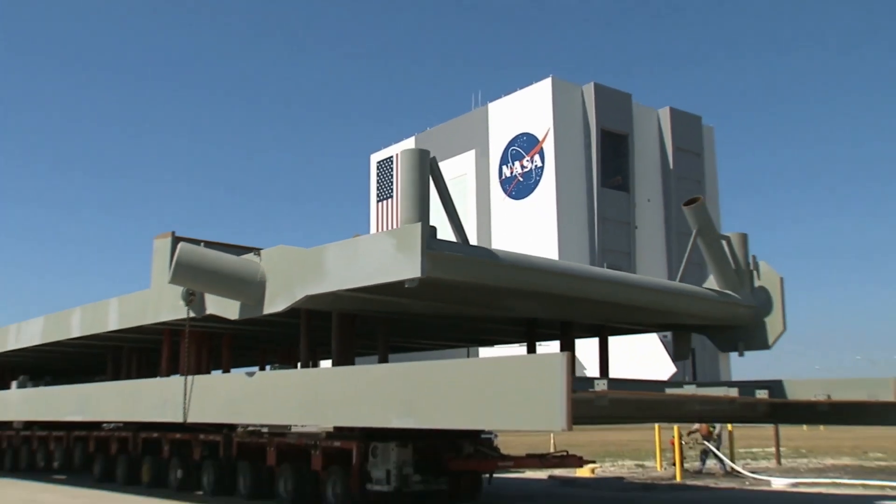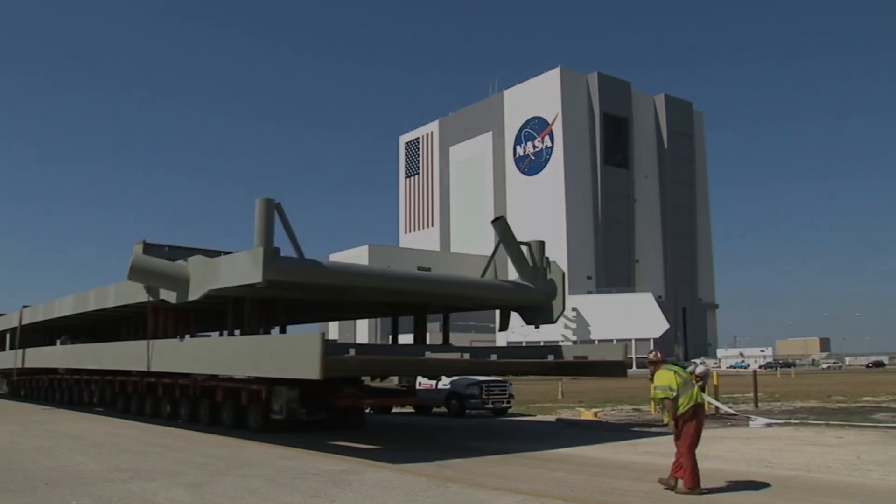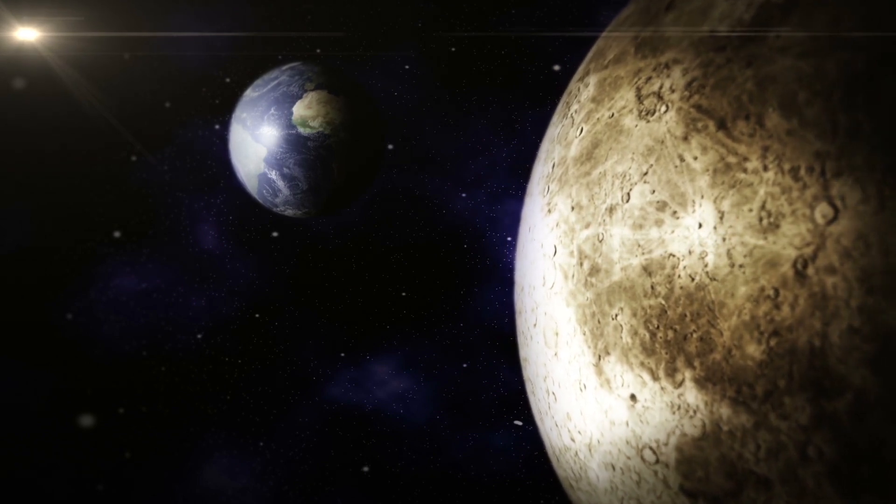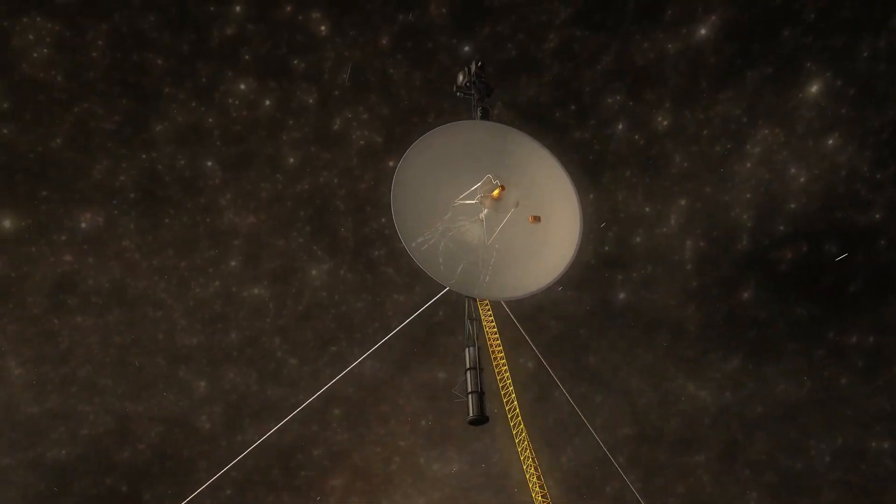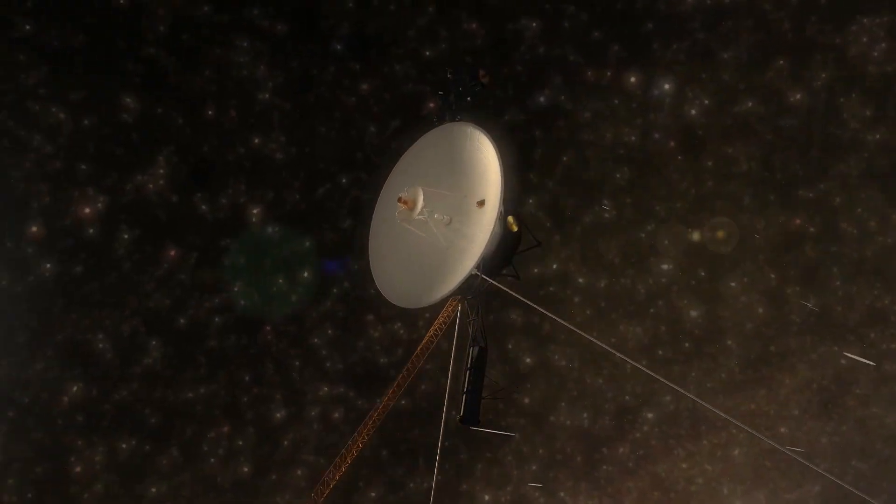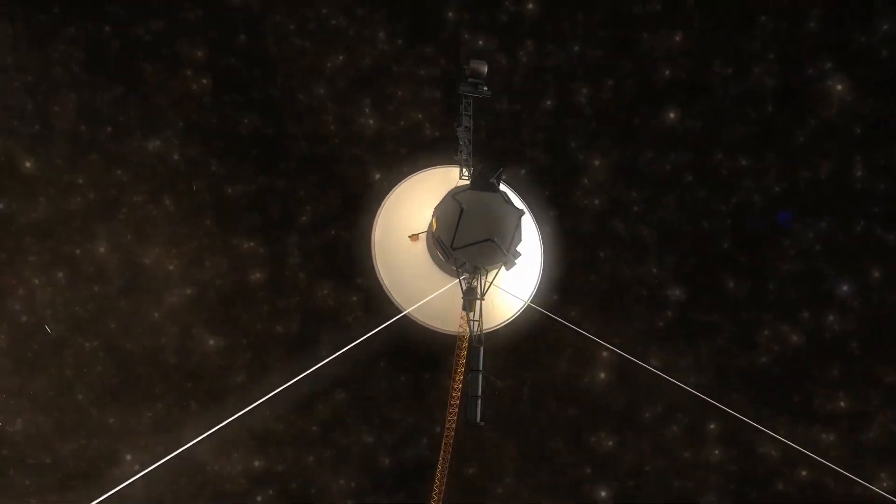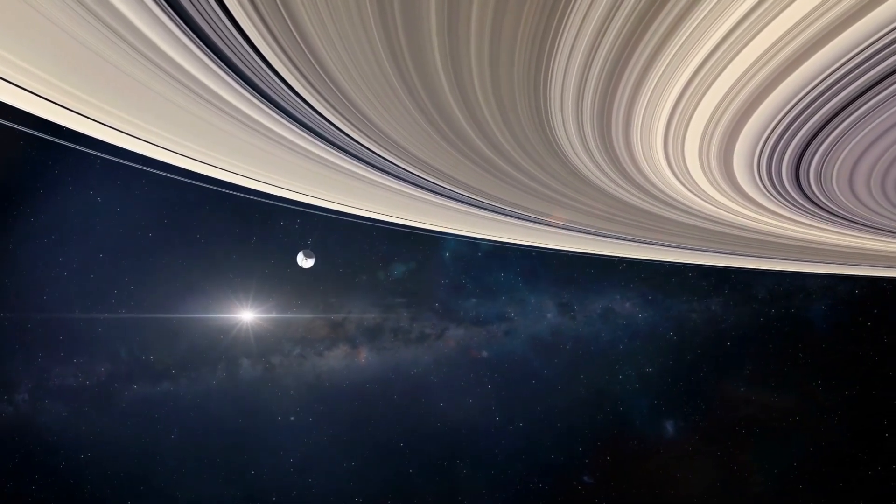NASA has since reoriented the craft and has found that it is still completely operational. This has raised speculation that the probe may have come into contact with something that made it change its trajectory. The only other explanation is that the Voyager experienced a glitch for the first time in almost 50 years, a flawless operation. Although these events are hard to explain, there is no denying something strange happened to the probe that day. What it was is something we may never know for sure.